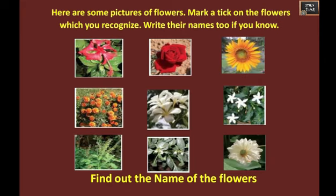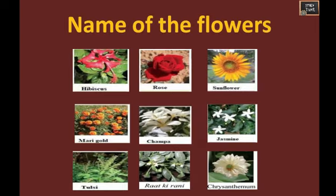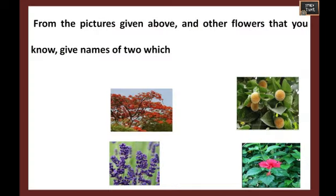Here are some pictures of flowers. Mark a tick on the flowers you recognize and write their names too. The flowers shown are: hibiscus, rose, sunflower, marigold, champa, jasmine, tulsi, raat ki rani (meaning queen of night), and chrysanthemum. These are the flowers from the pictures given.